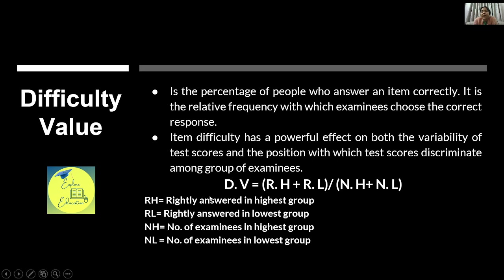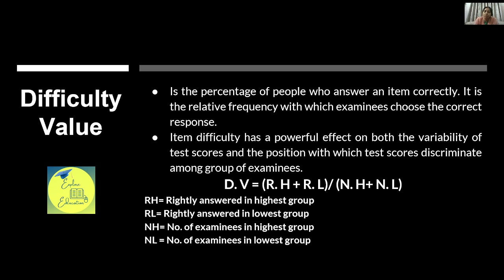In the formula DV = (RH + RL) / (NH + NL), RH is rightly answered in the highest group and RL in the lowest group. When multiplied by 100, we get the percentage. The range of difficulty value is 0 to 1. A difficulty value of 1 (100%) means everyone answered correctly, making the item meaningless for assessment.